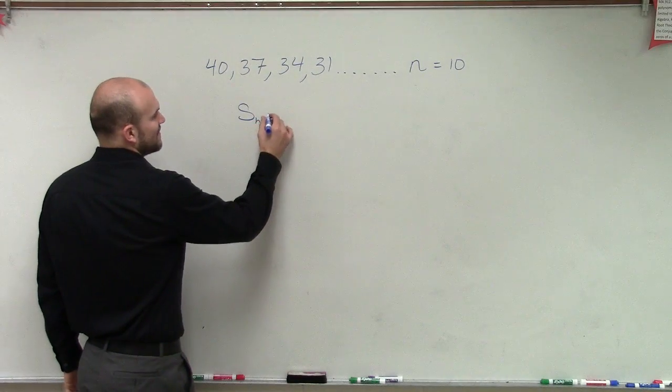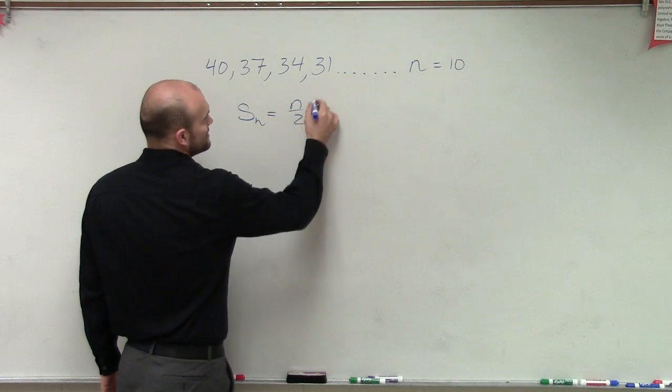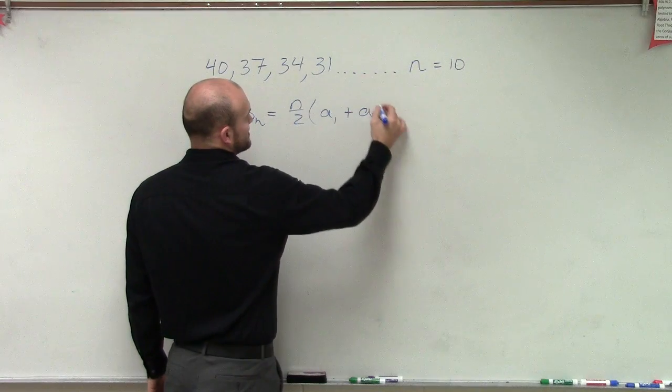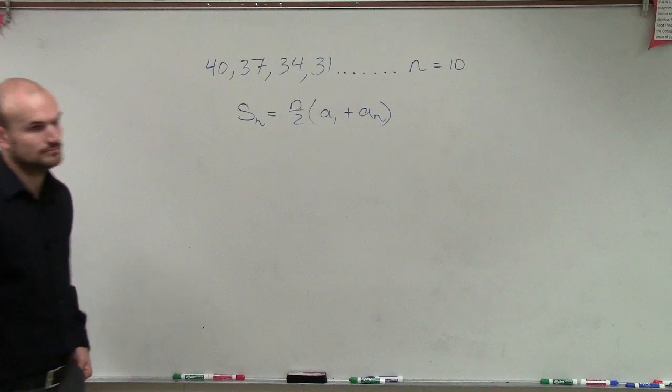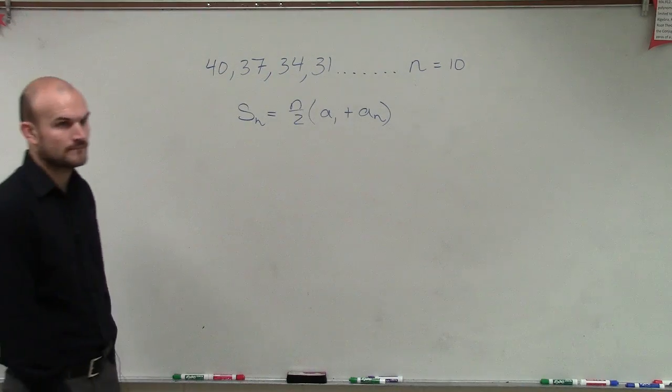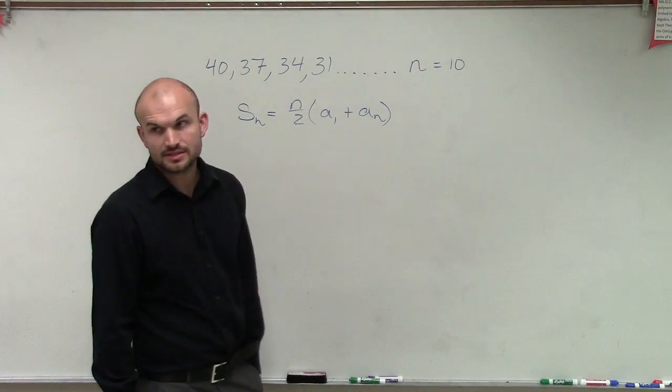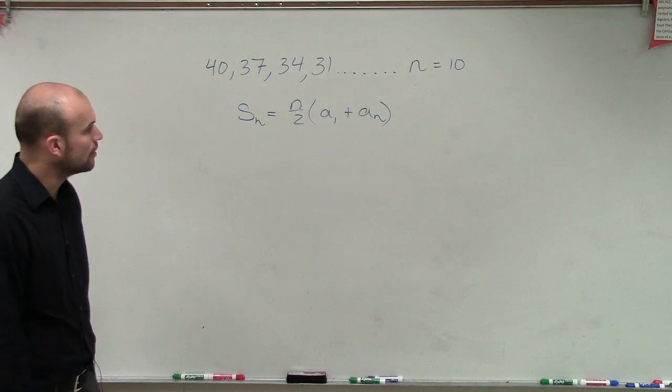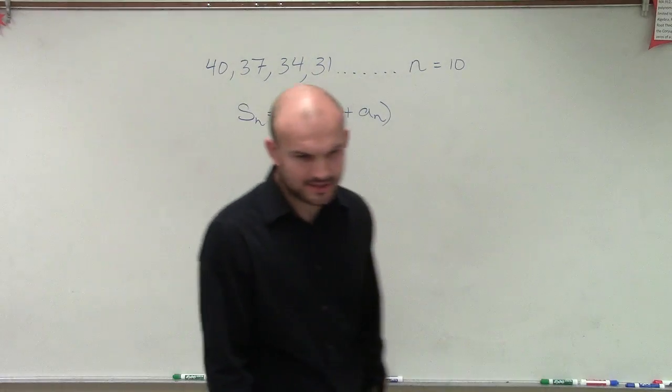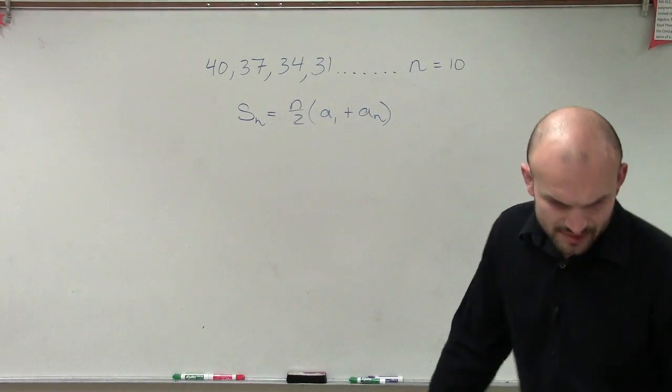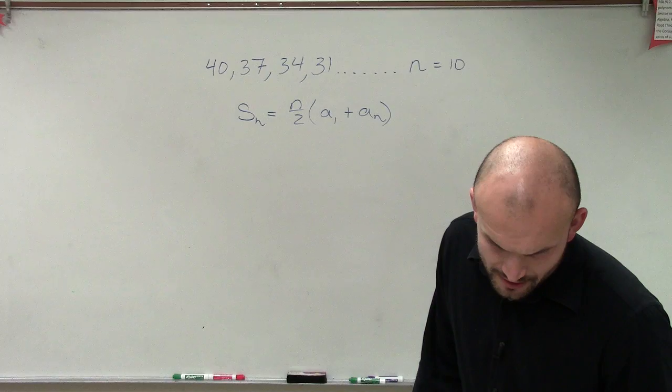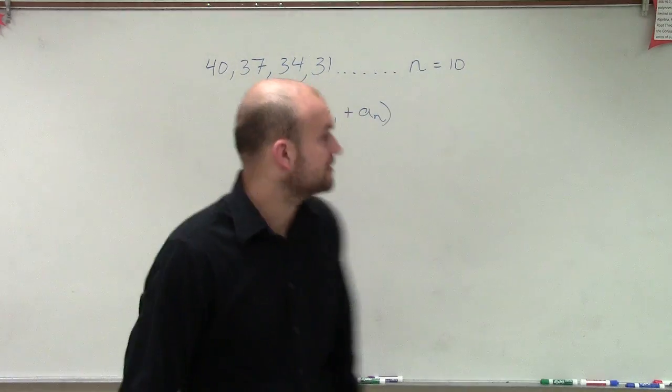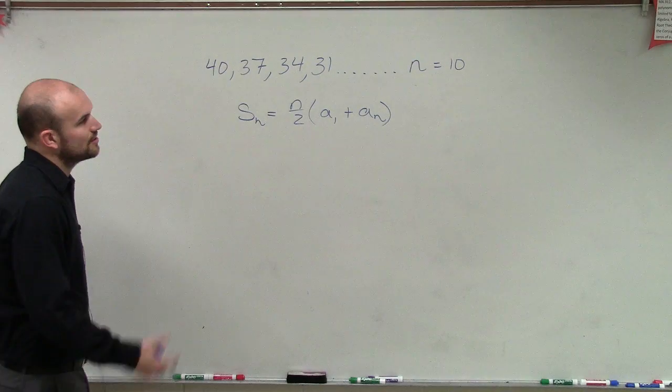Remember, the formula is S_n equals n divided by 2 times a sub 1 plus a sub n. Yes, no, maybe so. OK. So when we're looking at this, which number I said was this? 57? 57. OK, so let's go ahead and figure out.